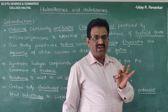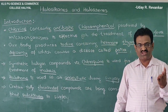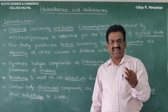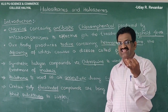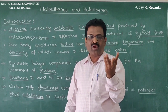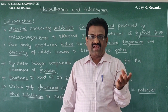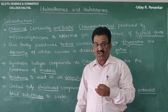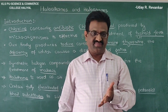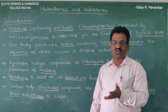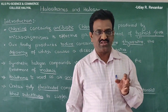In this chapter, we are going to discuss classification. First, an introduction, then classification, then the difference between haloalkanes and haloarenes, their properties, nomenclature, and stereochemistry as a tool for discussing their reactions. We will also discuss polyhalogen compounds and their environmental effects.